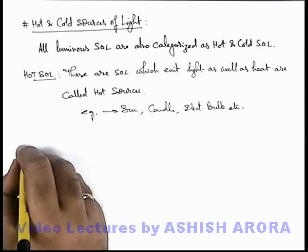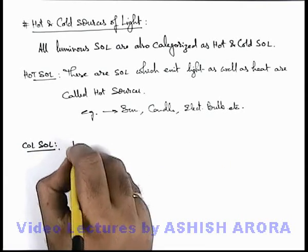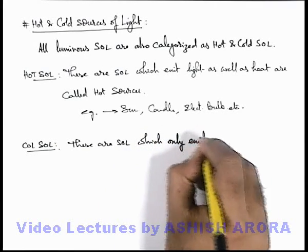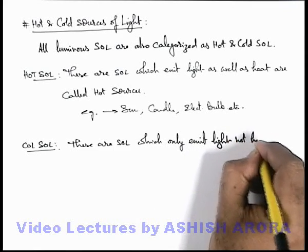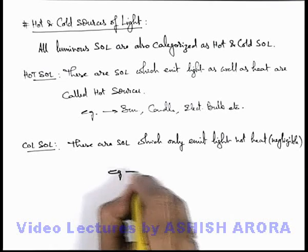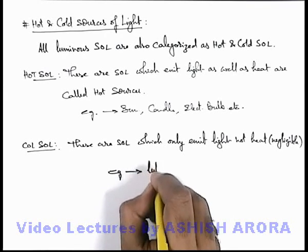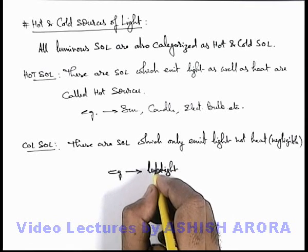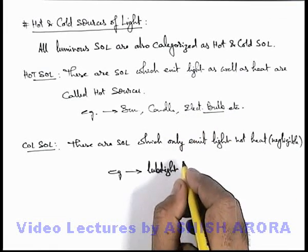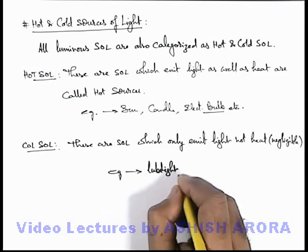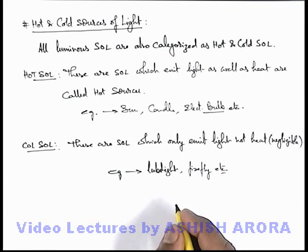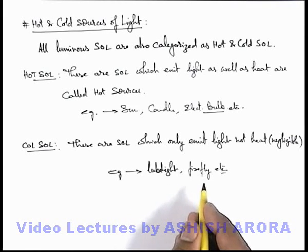If we talk about cold sources of light, these are sources of light which only emit light, not heat — or we can say the amount of heat produced is negligible. Such sources are called cold sources of light. For example, a fluorescent lamp like a tube light is a cold source of light. An electric bulb, which also produces heat, is called an incandescent lamp. A firefly, which naturally produces light, is also a cold source of light. So any source which is only emitting light and not heat is termed a cold source of light.